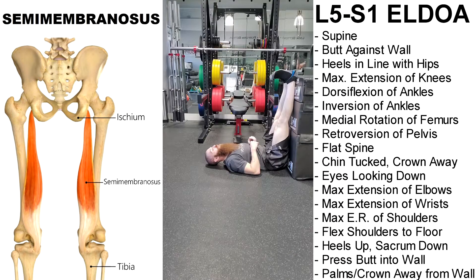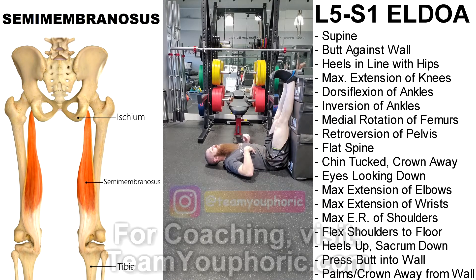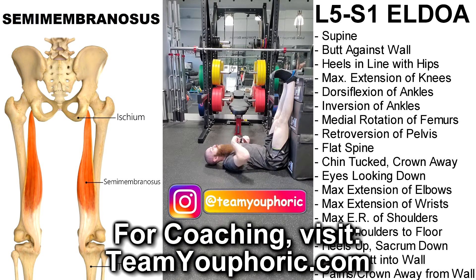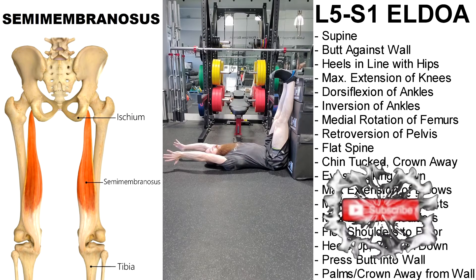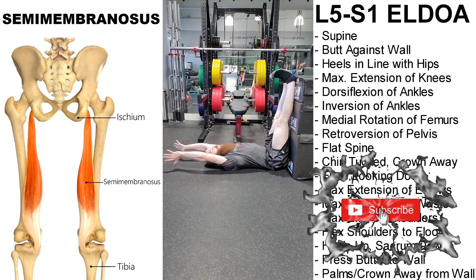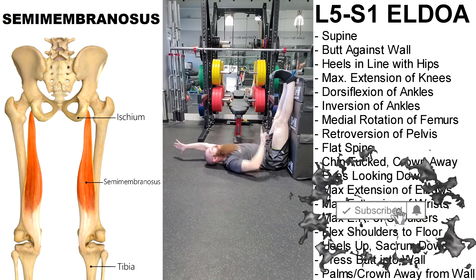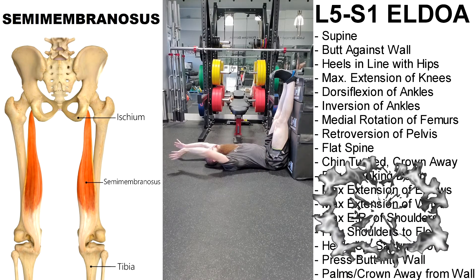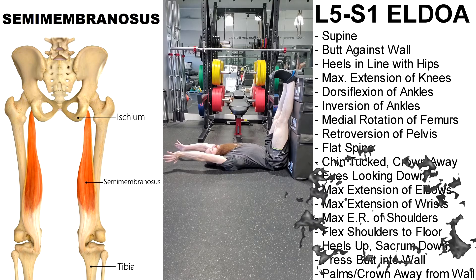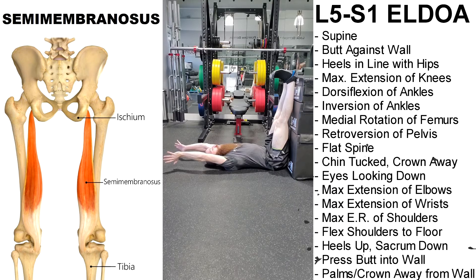From this position, maintain retroversion of the pelvis, flat lumbar spine, flat thoracic, chin tucked in, crown of head away, eyes looking down forward to put the dura mater under tension. Maximum extension of elbow and wrist, maximum external rotation of the shoulders, flex the shoulders toward the floor. Then we want everything going in the opposite direction — heels up, sacrum down into the wall, coccyx into the wall, crown and palms away. This is the L5-S1 ELDOA.